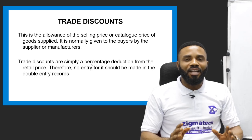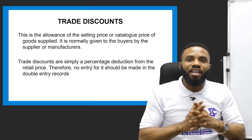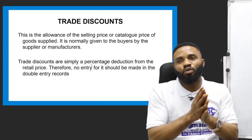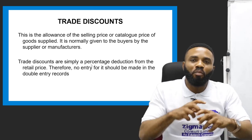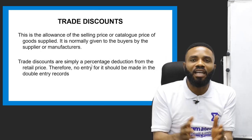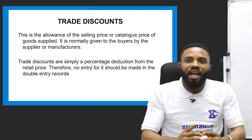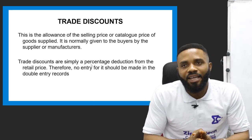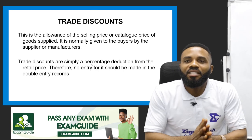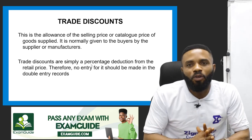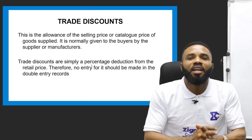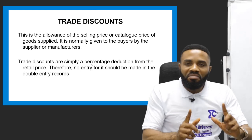We also need to understand the concept of trade discount, since discount is part of what should appear on an invoice. Trade discount is the allowance off the selling price or catalog price of a good supplied. It is normally given to buyers by suppliers or manufacturers. Trade discounts are simply a percentage deduction from the retail price, and therefore no entry for them should be made in the double entry records.